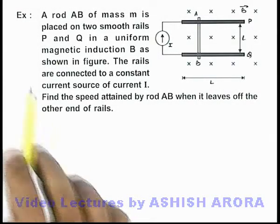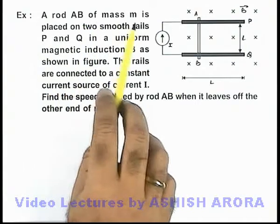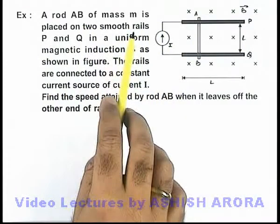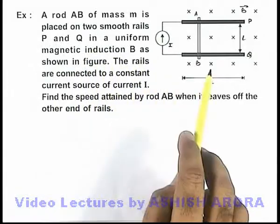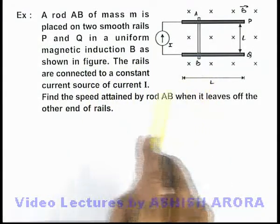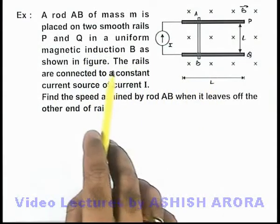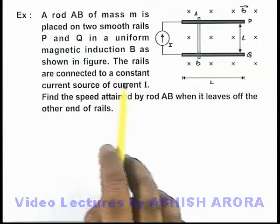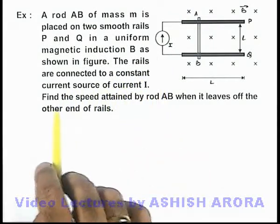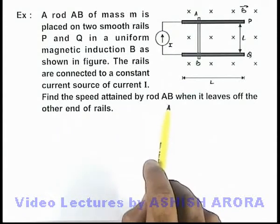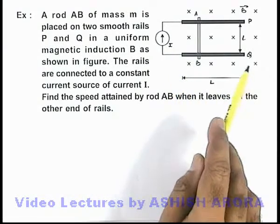In this example, we are given that a rod AB of mass m is placed on two smooth rails P and Q in a uniform magnetic induction B, as we can see here in the figure. The rails are connected to a constant current source of current I, and we need to find the speed attained by rod AB when it leaves off the other end of the rails.